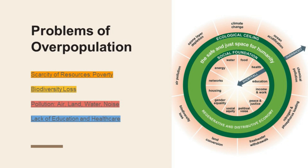There are various other issues like climate change, ocean acidification, chemical pollution, fresh water withdrawals, and land conversion. All of these problems add on to overpopulation, and what we are falling short of is water, food, health, education, income and work, peace and justice, political voice, social equality, and gender equality.